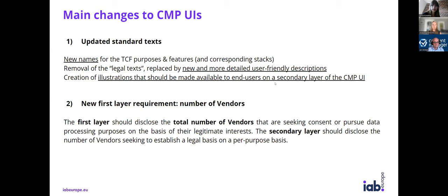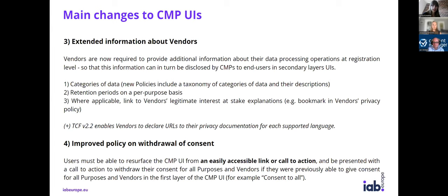The second change is a new requirement about the disclosure of the number of vendors in the first layer and the secondary layer of the CMP UI. The first layer needs to show the total number of vendors seeking consent. The secondary layer should show the number of vendors on a per-purpose basis. Additionally, the CMP UI now needs to contain more vendor information: categories of data collected, retention periods on a per-purpose basis, and if applicable, a link to the legitimate interest at stake explanation, such as a bookmark in the vendor's privacy policy.